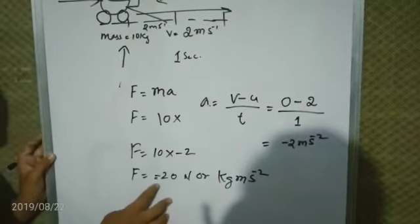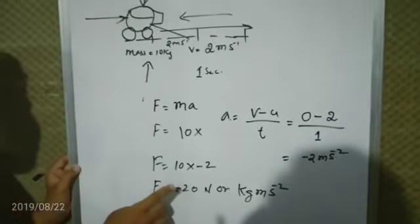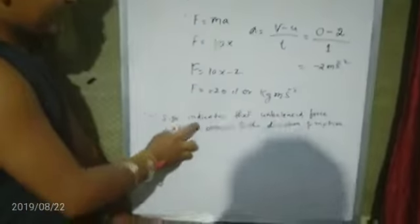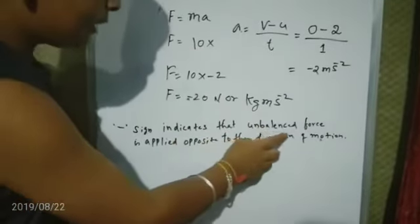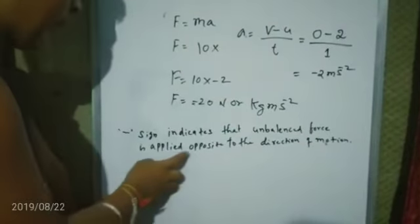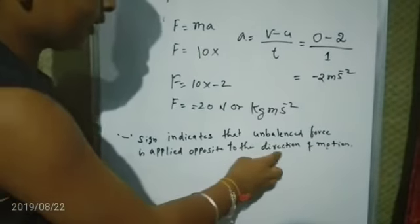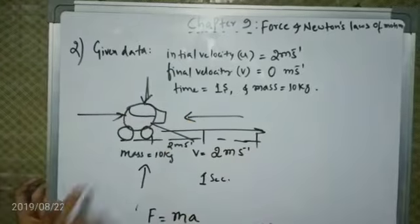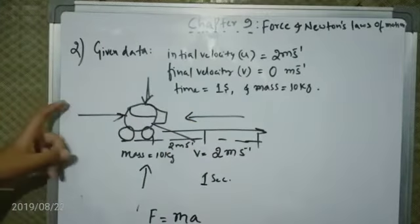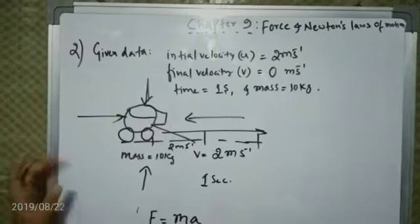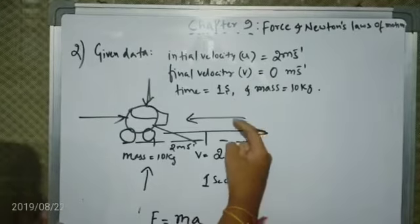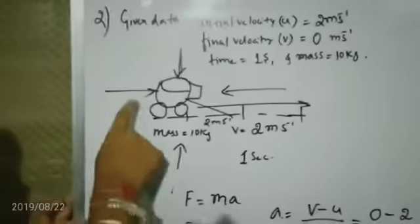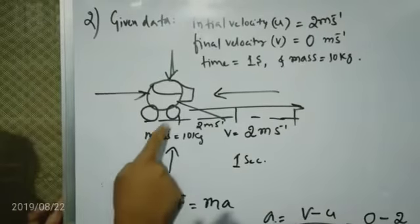The minus sign indicates that the unbalanced force is applied opposite to the direction of motion. The object is moving from the left side, so we should apply the force of minus 20 N from the right side. This will bring the object to rest.